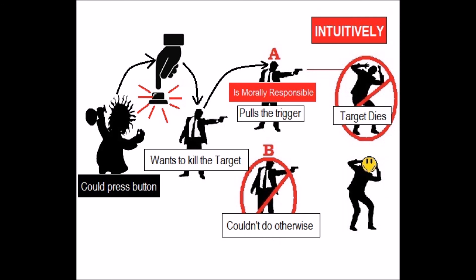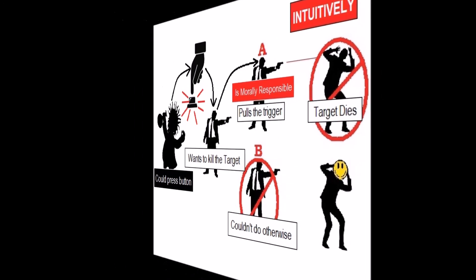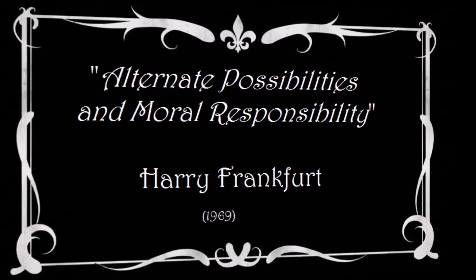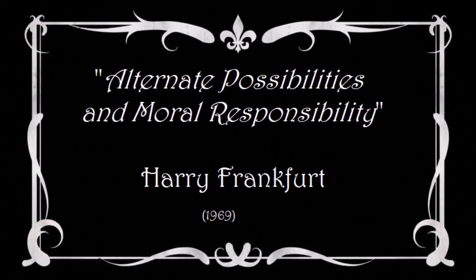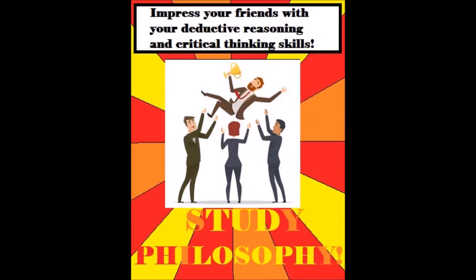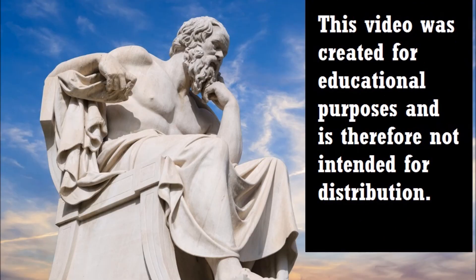Therefore, this is a case where, intuitively, we would want to say that someone is morally responsible for what they did, even though it was impossible for them to do otherwise. And therefore, contrary to the normative model of human freedom, moral responsibility does not seem to depend on the ability to do otherwise. Thank you for watching, and until next time, take care.